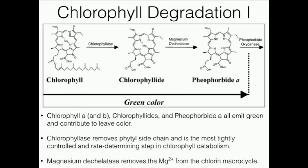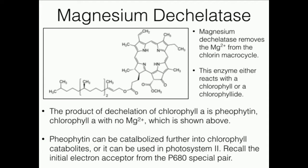When we react with magnesium d-chelatase, we're going to get this molecule called pheophorbide A. Pheophorbide A is basically chlorophyllide A without the magnesium in the center. We're going to react it with pheophorbide oxygenase, and that's going to break apart the ring. But first, let's look into magnesium d-chelatase.